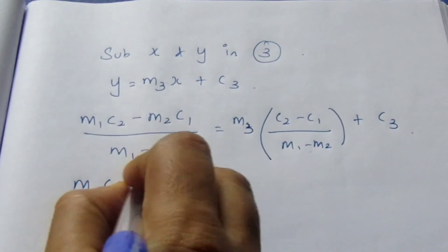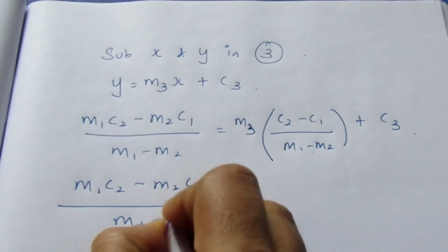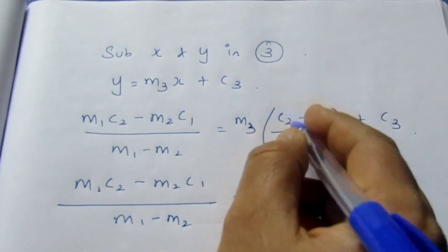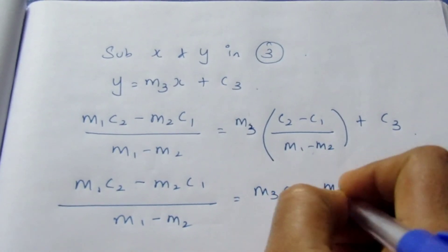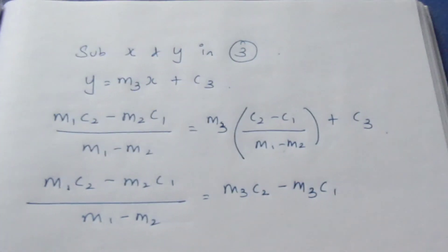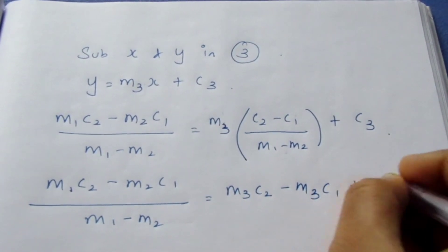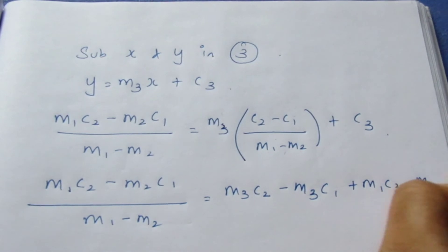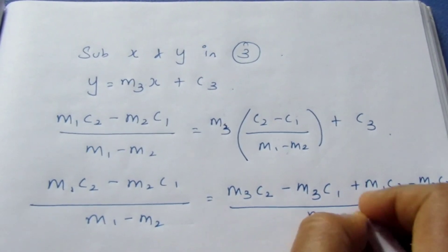Now (m₁c₂ - m₂c₁)/(m₁ - m₂). You are multiplying it inside, it becomes (m₃c₂ - m₃c₁)/(m₁ - m₂), also taking LCM. So we need to multiply with both terms. So it becomes (m₁c₃ - m₂c₃)/(m₁ - m₂).